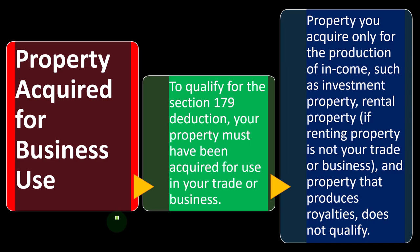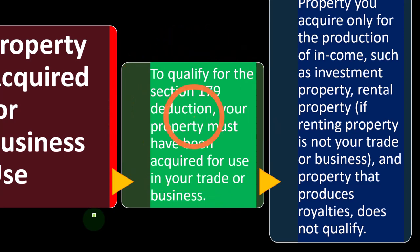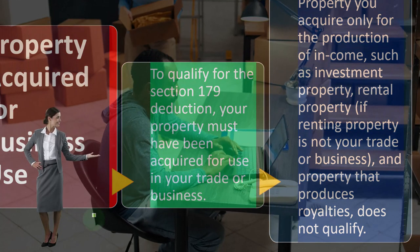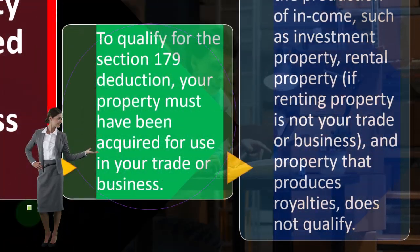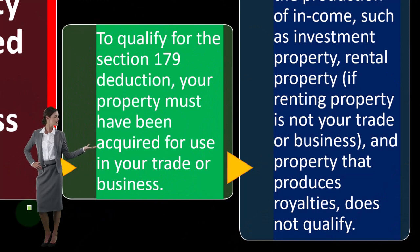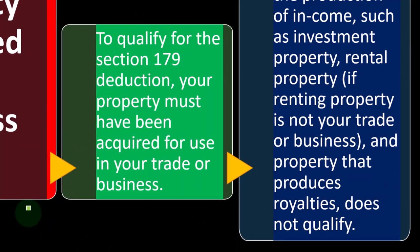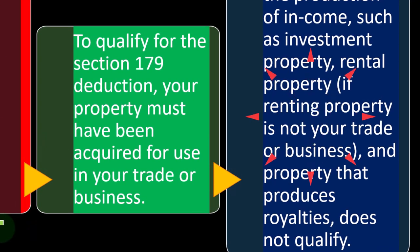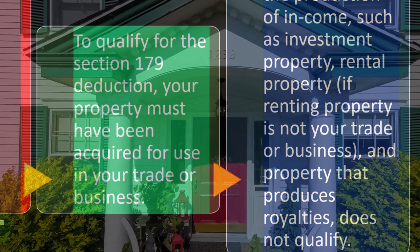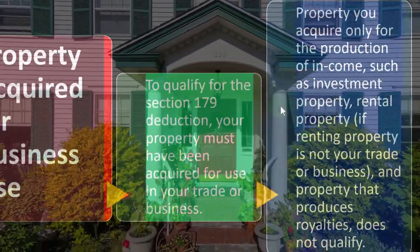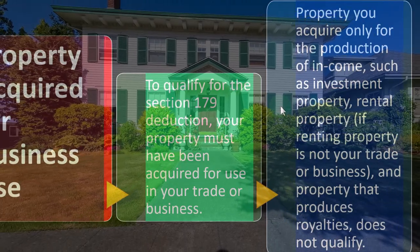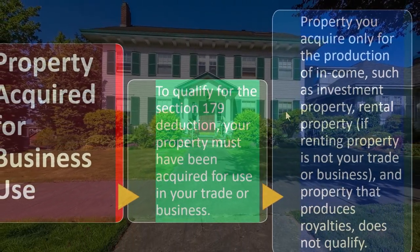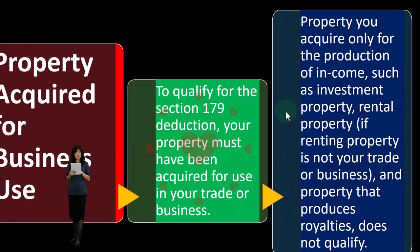In other words, is it property you're sitting on that's going to appreciate in value, or are you actively involved? If you're talking about something reported on a Schedule C — a sole proprietorship where you're actively involved and subject to self-employment tax — that's different from buying property you're just holding on to hoping it appreciates, which would be more of a passive investment situation. The tax code sometimes makes a distinction for those different types of holdings. So property acquired only for production of income, such as investment property, rental property (if renting is not your trade or business), and property that produces royalties — these do not qualify.